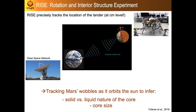RISE is not a dedicated instrument per se but exploits the lander's communication system. It acts like a mirror, reflecting back to Earth signals sent from the space network, which are analyzed in terms of their Doppler shift to very precisely track the lander's position. This allows us to locate Mars in space and study how it wobbles around its orbit — determining whether it wobbles more like a soft-boiled or hard-boiled egg, inferring whether the core is liquid or solid and how large it is.